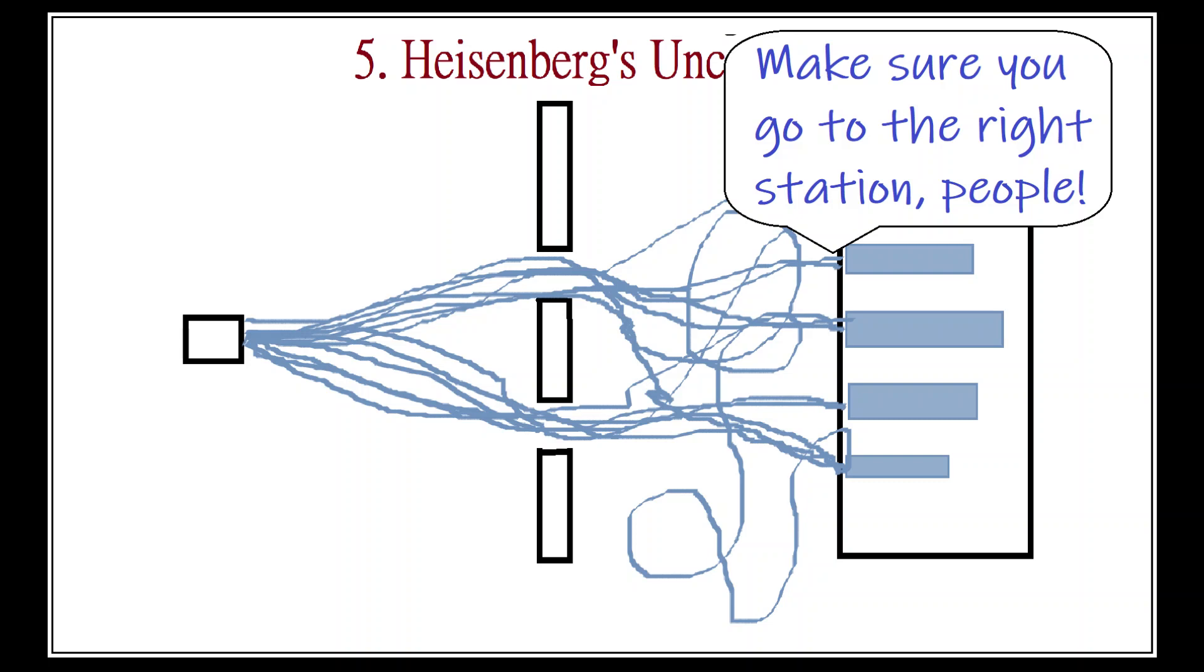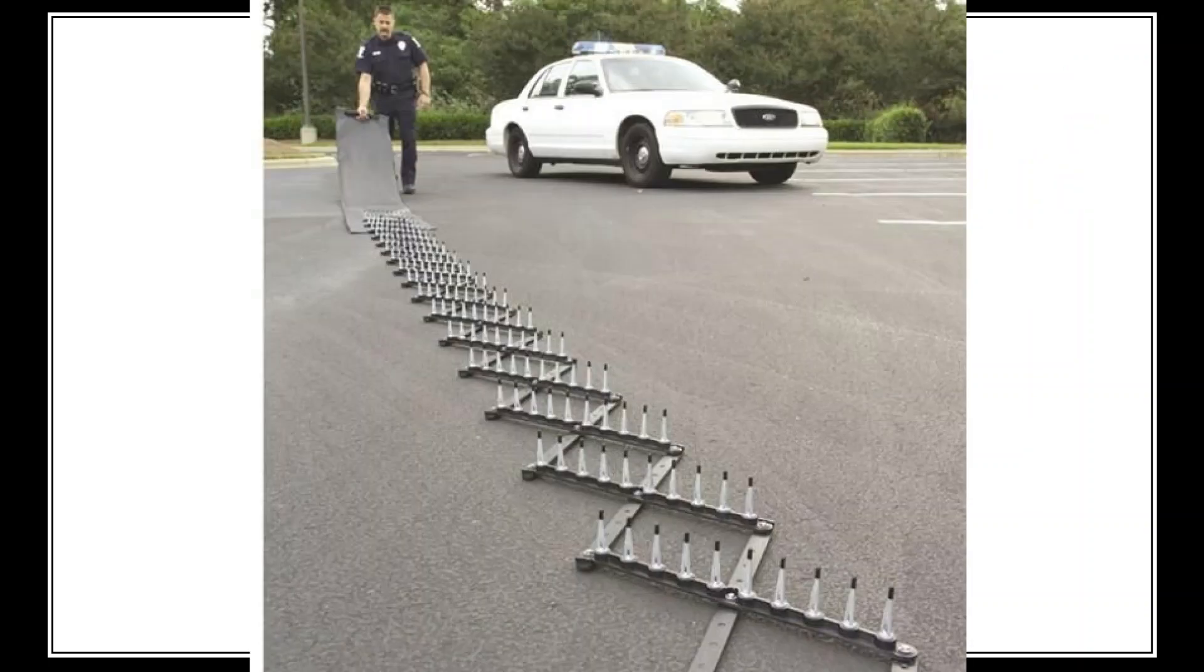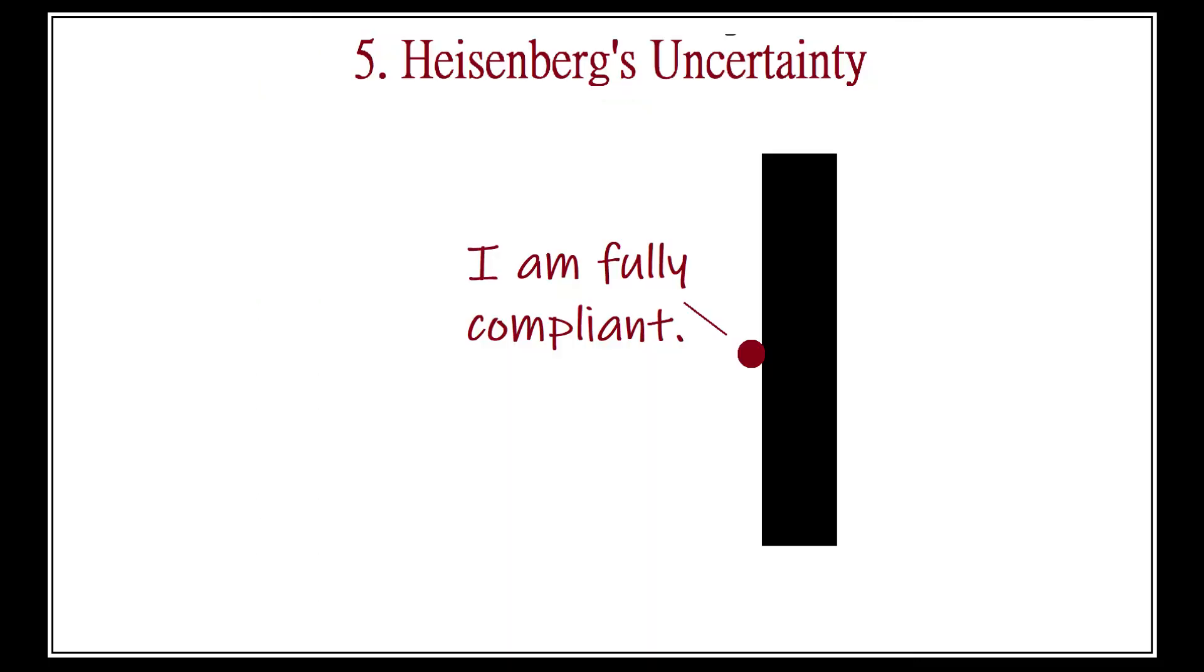The only way to find out a photon's exact position is to measure it, that is, to stop it in its tracks by forcing it to hit something and expend its Planck worth of energy, so that we know where it hit. But once we do this, we cease to see its individual wave function, which has collapsed into the particle.